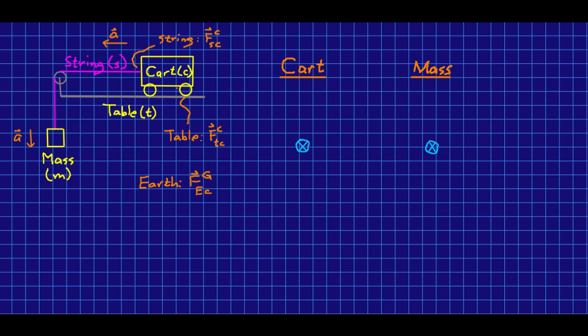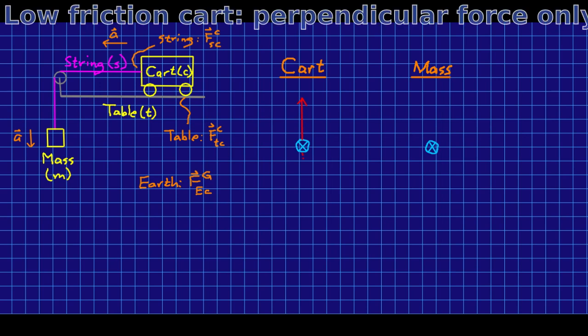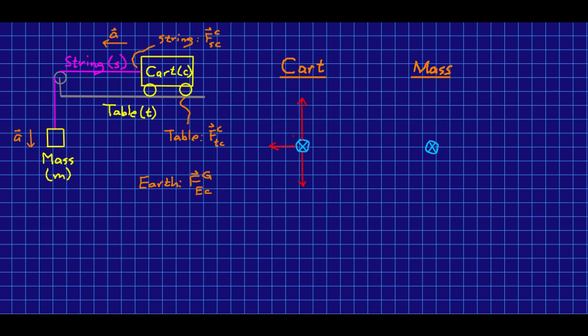I'm going to start with the free body diagram of the cart, and so I've listed the agents and the forces that they'll exert. The table is just going to push up. And then there will be a gravitational force down, and the string is going to pull to the left.